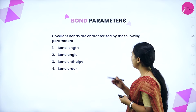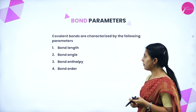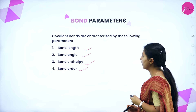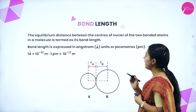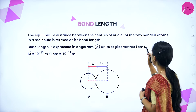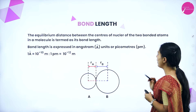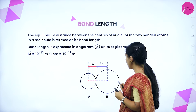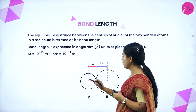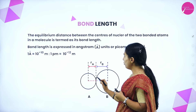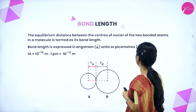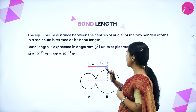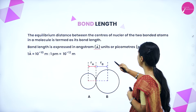Next, bond parameters. Covalent bonds are characterized by bond length, bond angle, bond enthalpy, and bond order. Bond length is the equilibrium distance between the centers of the nuclei of two bonded atoms in a molecule. Bond length is expressed in angstrom units (10⁻¹⁰ m) or picometers (10⁻¹² m).